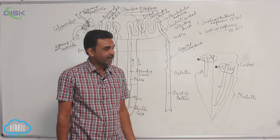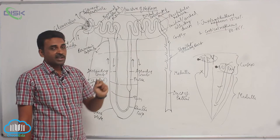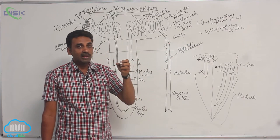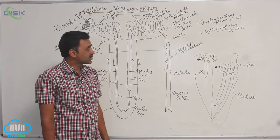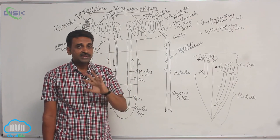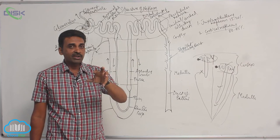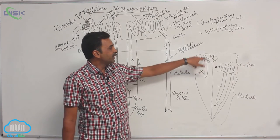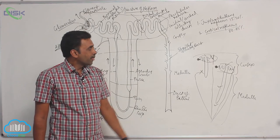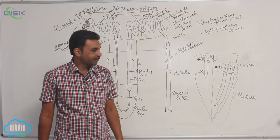The difference between juxtamedullary and cortical nephrons: cortical nephrons are more in number (80–85%), while juxtamedullary nephrons are fewer (15–20%). The Malpighian body is in the outer cortex for cortical nephrons and towards the inner cortex for juxtamedullary nephrons. Blood supply for cortical nephrons is peritubular network only (vasa recta absent), whereas juxtamedullary nephrons have both peritubular network and vasa recta. Henle's loop is short in cortical nephrons and long in juxtamedullary nephrons. Cortical nephrons serve mainly filtration; juxtamedullary nephrons serve both filtration and concentration of urine.